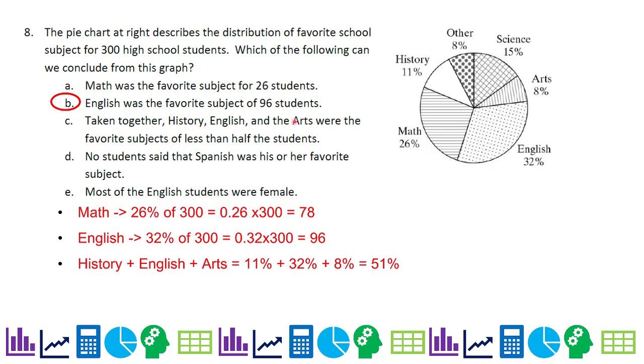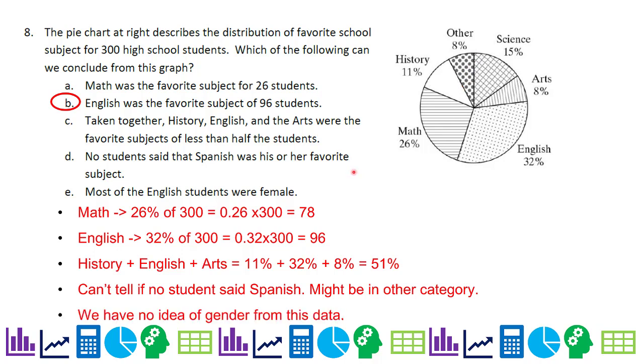If I add up history, English, and the arts, these were the favorite subjects of 51%, which is actually more than half of the students. We can't tell if no students said Spanish. They might be in this other category. And we have no idea of gender from this data. So we don't know if most of the English students were female.